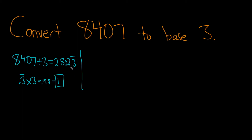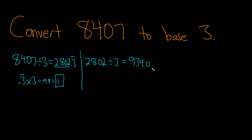Then you do it again. You take 2,802 and divide by 3. So 2,802 divided by 3 — I got 934. And there's no remainder, so if you wanted to show the work, you could do 0.0 times 3. You see the remainder is 0.